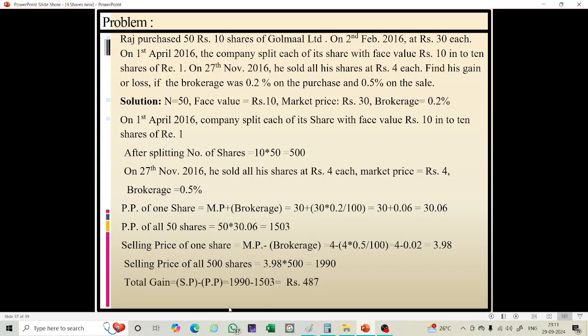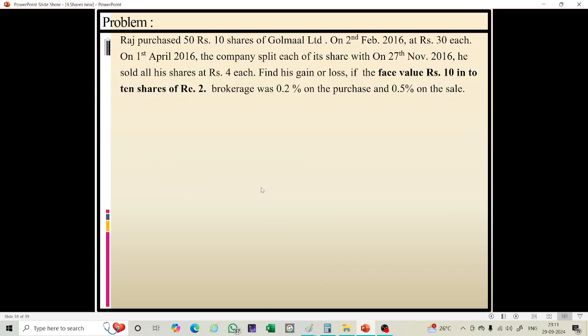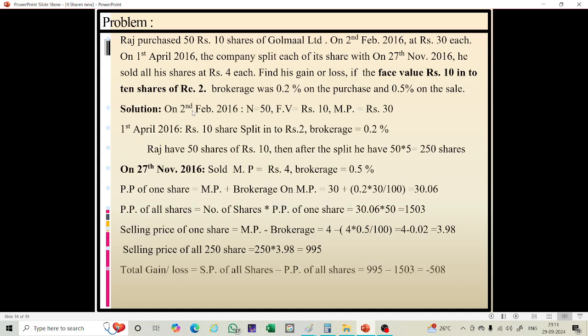Total gain equals selling price of all shares minus purchase price of all shares, that is 1,990 minus 1,503, which equals rupees 487. This is the total gain.